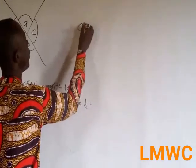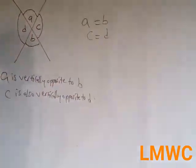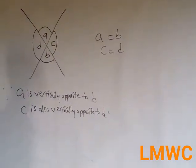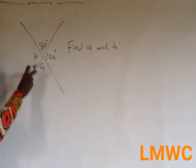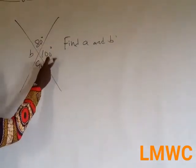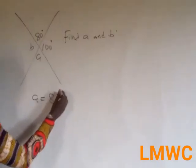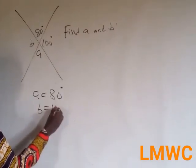So A is equal to B and C is equal to D. Vertically opposite angles are equal. If I give you this example, this means A is vertically opposite to 80 and B is vertically opposite to 100. So A is equal to 80 degrees and B is also equal to 100 degrees. That is vertically opposite angles.